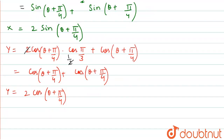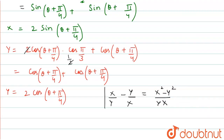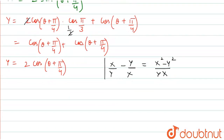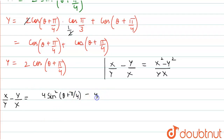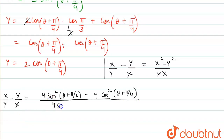Now we have to find the value of x/y minus y/x, which is equal to (x² minus y²) upon yx. Putting the values of x and y into this equation, x² is 4sin²(θ + 5π/4) minus 4cos²(θ + 5π/4), upon yx which is 4sin(θ + 5π/4) into cos(θ + 5π/4).